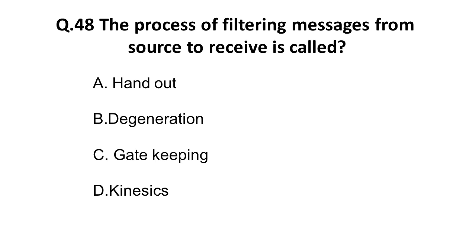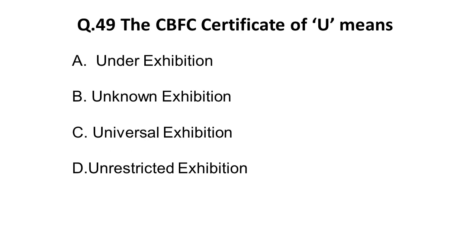Question 48: The process of filtering a message from the source to receiver is called — A) handout, B) generation, C) gatekeeping, D) kinesics. Kinesics is eliminated since it refers to gestures and body postures. The correct answer is C: gatekeeping.